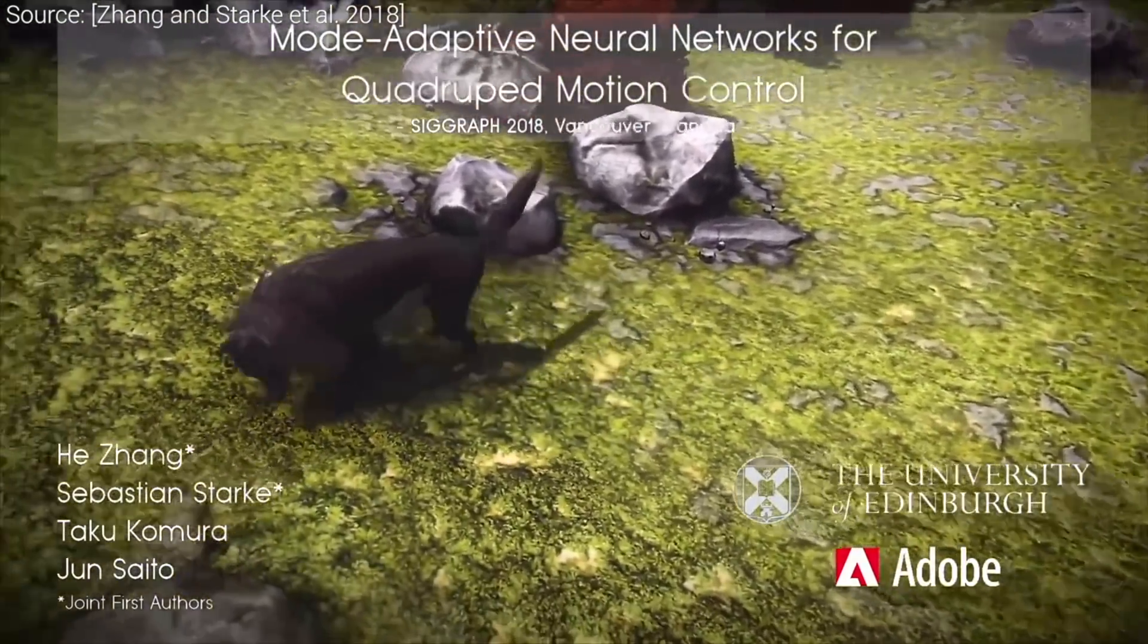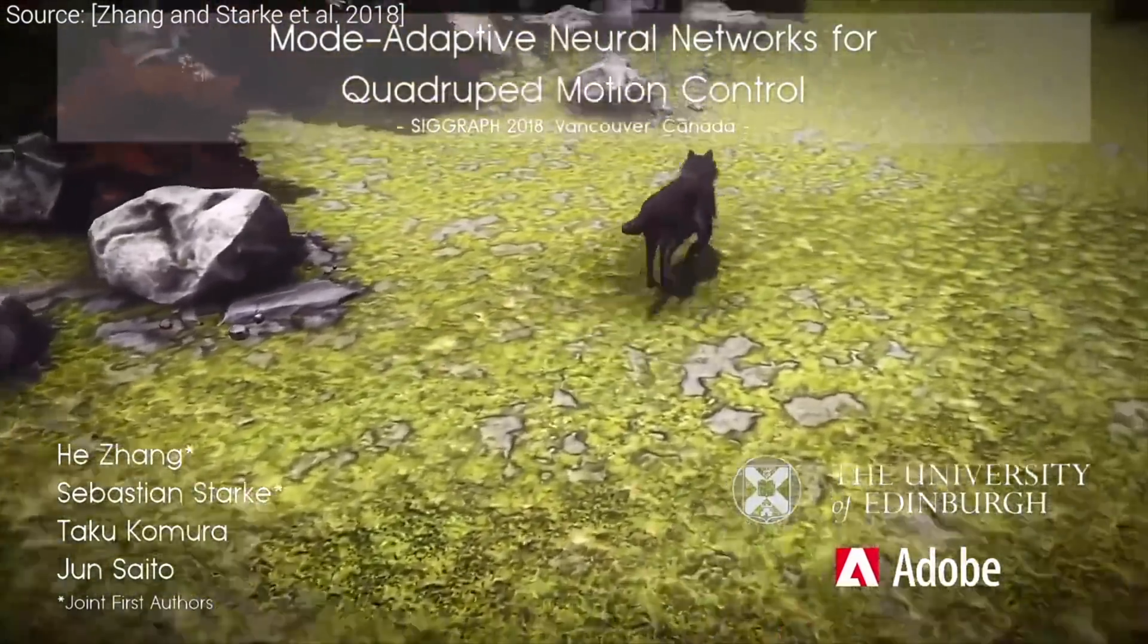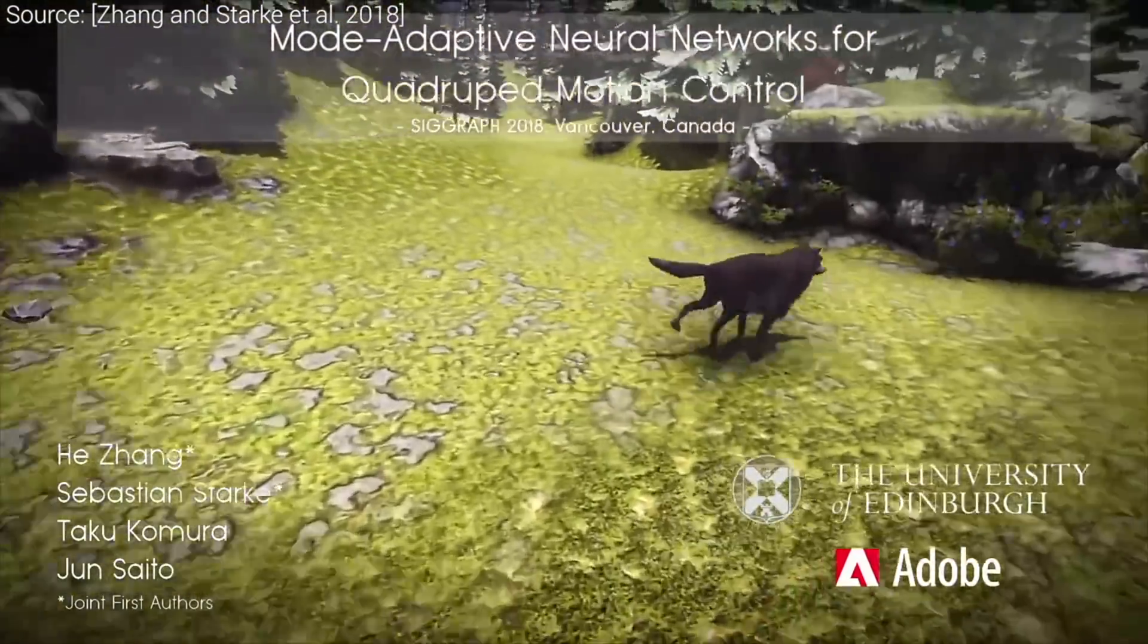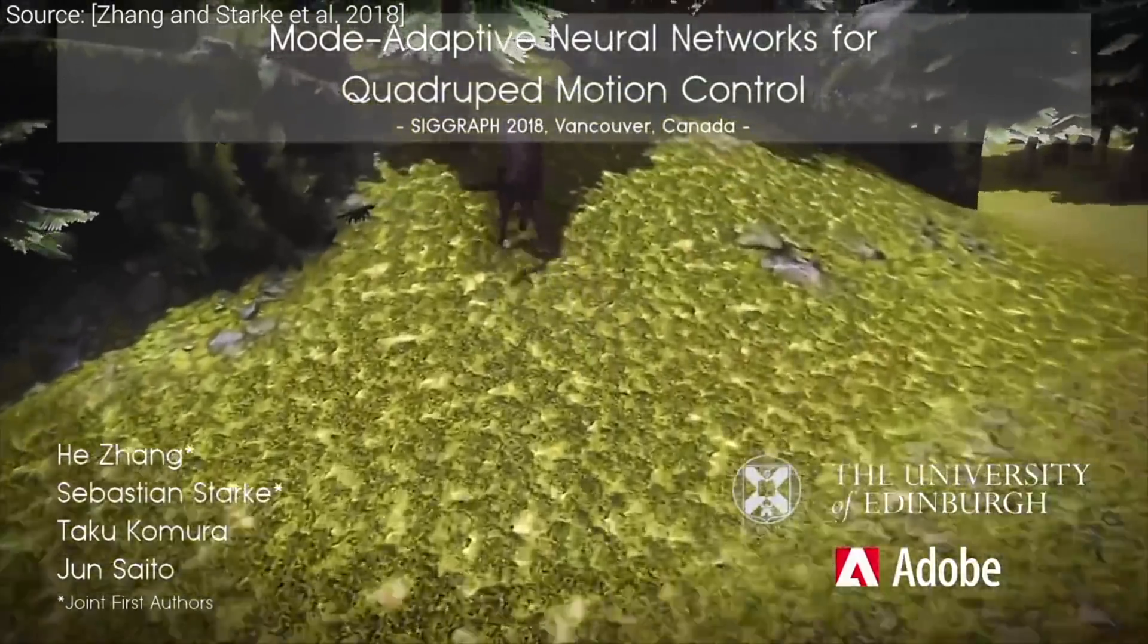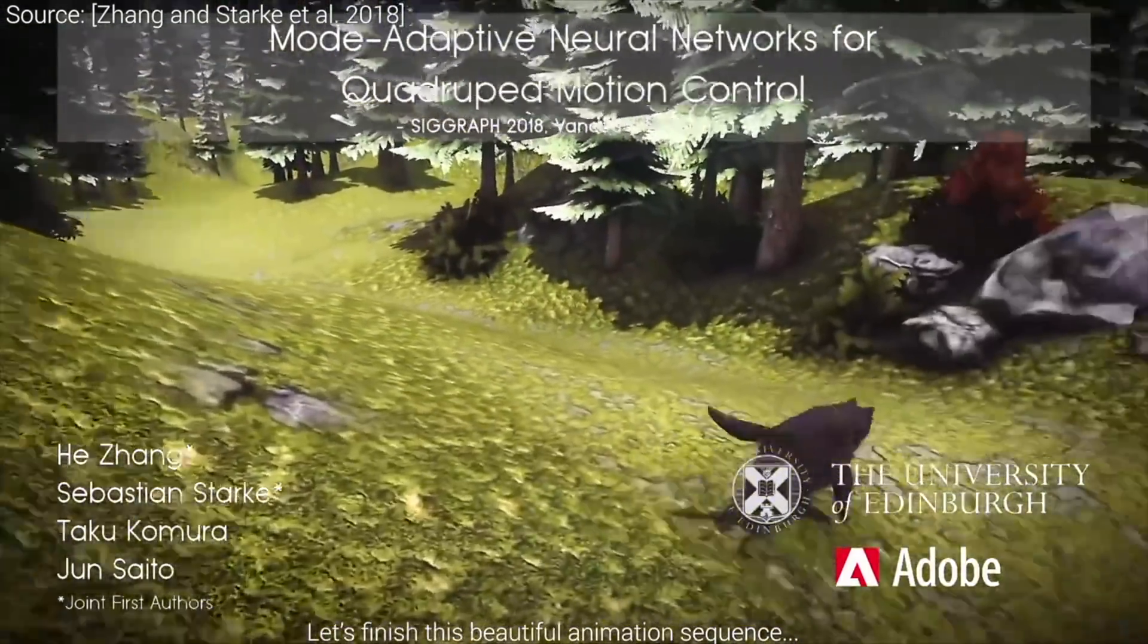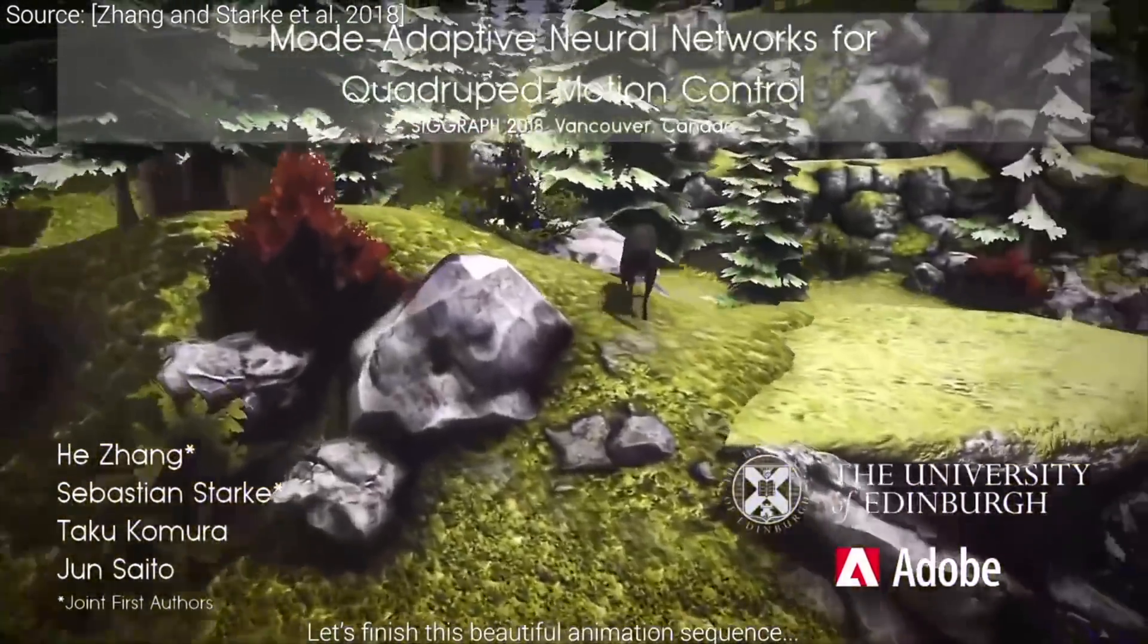There are two key challenges with this approach. One, we have to try to weave together all of these motions, because we cannot record all the possible transitions between sitting and pacing, jumping and trotting, and so on. We need some filler animations to make these transitions work.